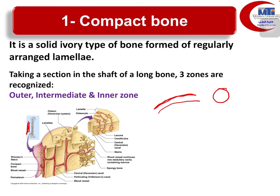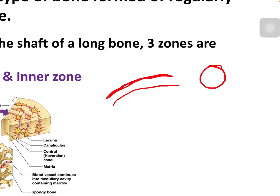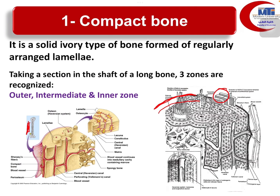If we examine the structure of compact bone under the microscope, we can find that it is organized into three zones: the outer zone, the intermediate zone, and the inner zone.